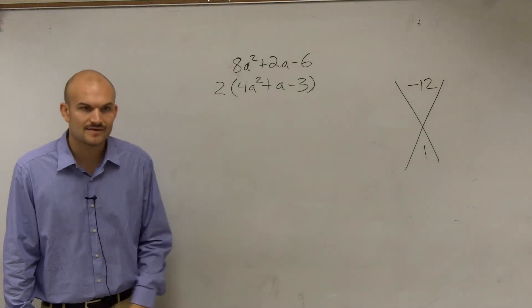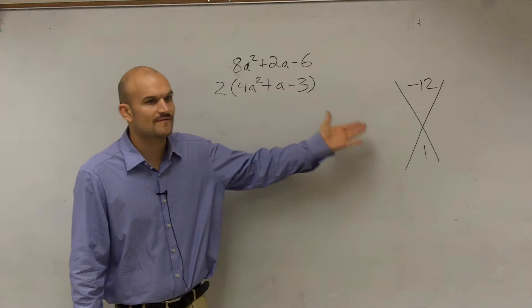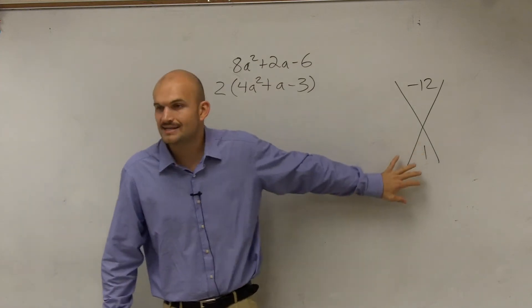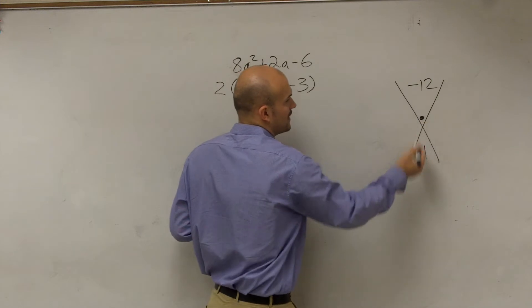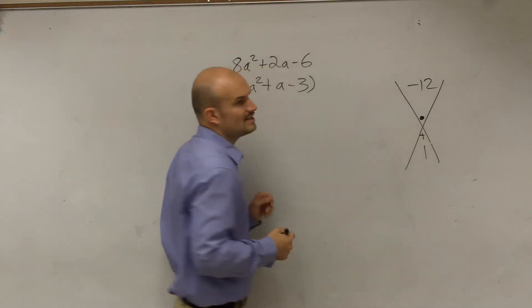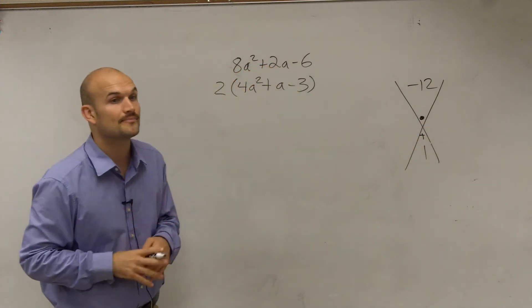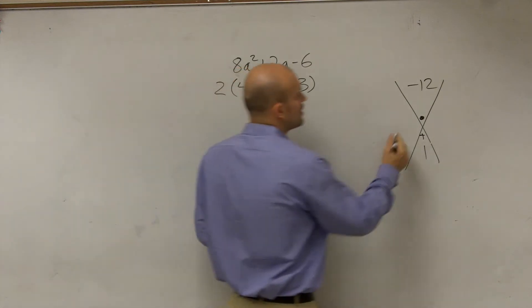What two factors of negative 12, or what are the factors of negative 12 that add to give me a positive 1? So what two numbers multiply to give me negative 12, but add to give me a positive 1? Yes, Brittany? 4 and negative 3. 4 and negative 3.